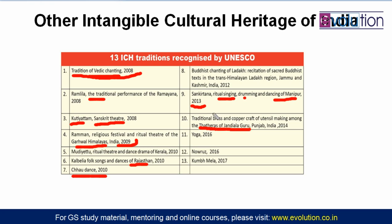The Thatheras of Jandiyala Guru, Punjab — a community that creates traditional brass and copper craft for utensil making — received the status in 2014. Yoga received the status in 2016. Nowruz also got it in 2016. And Kumbh Mela got intangible cultural heritage status in 2017.